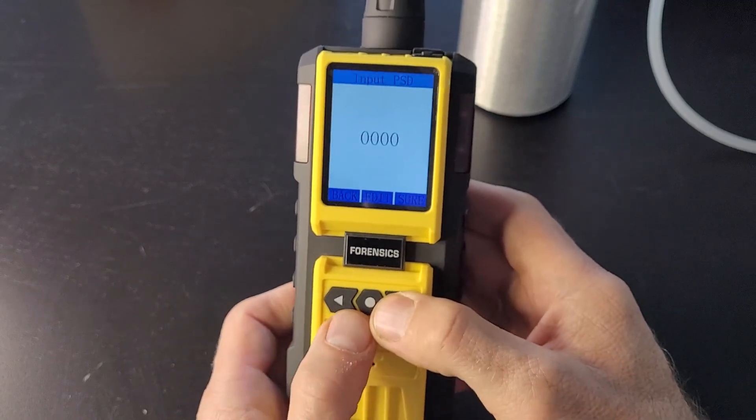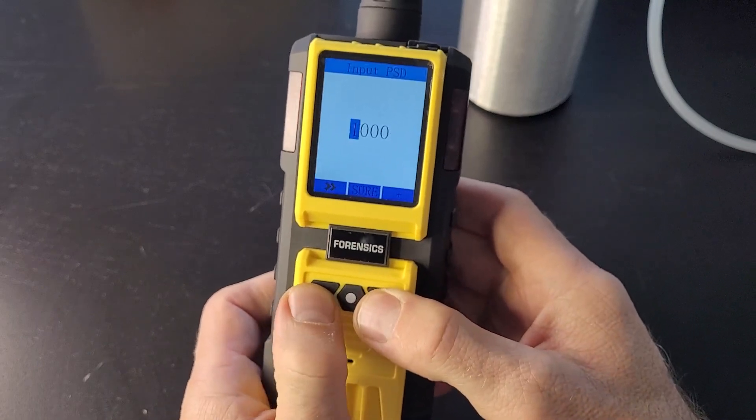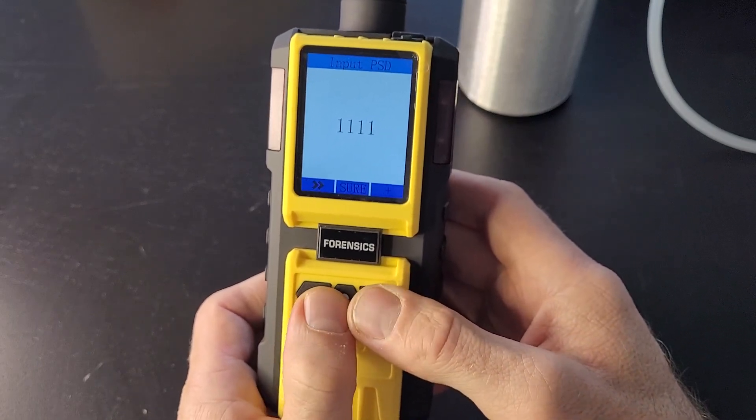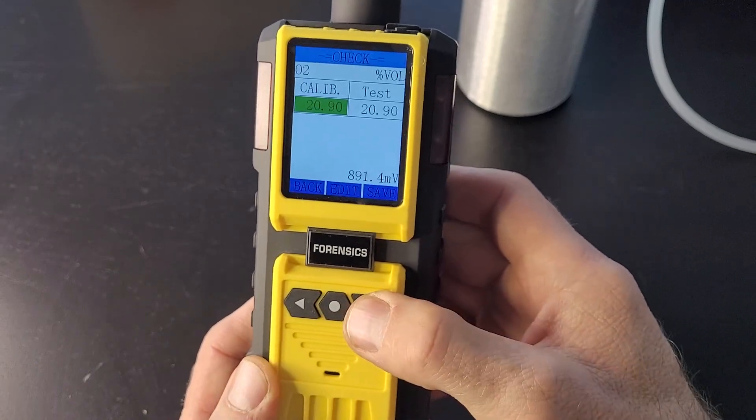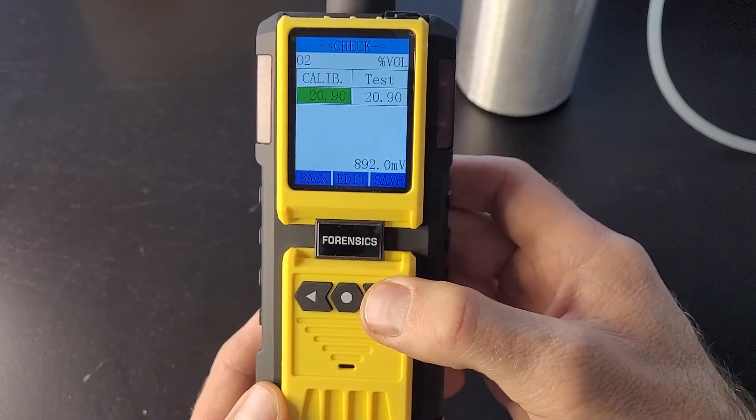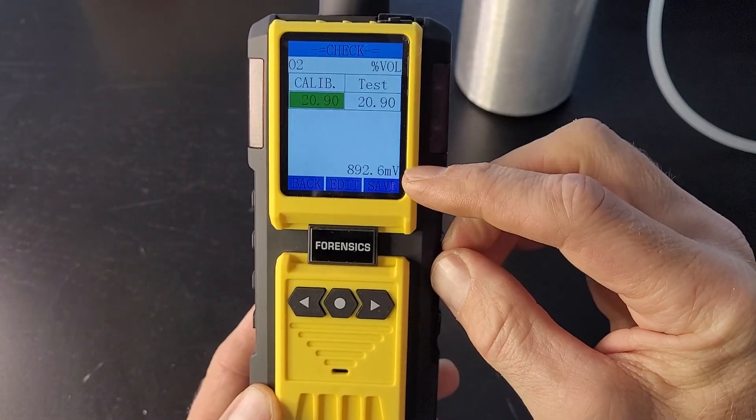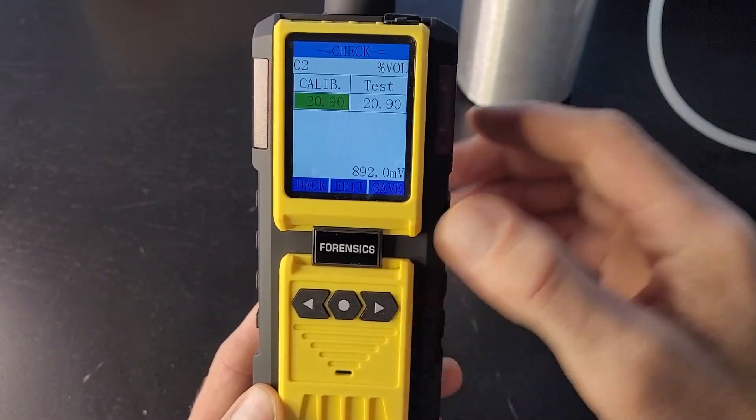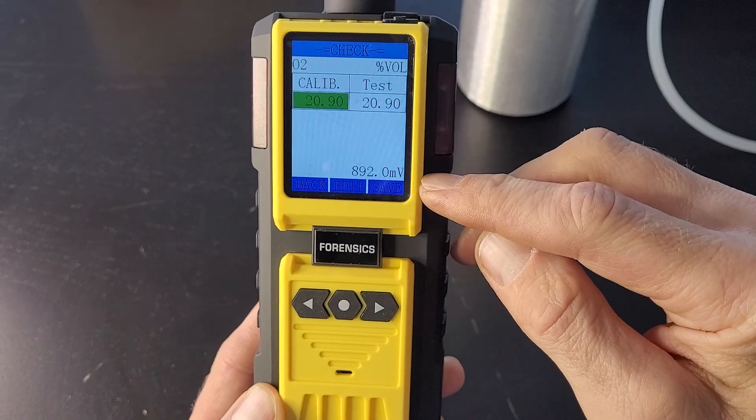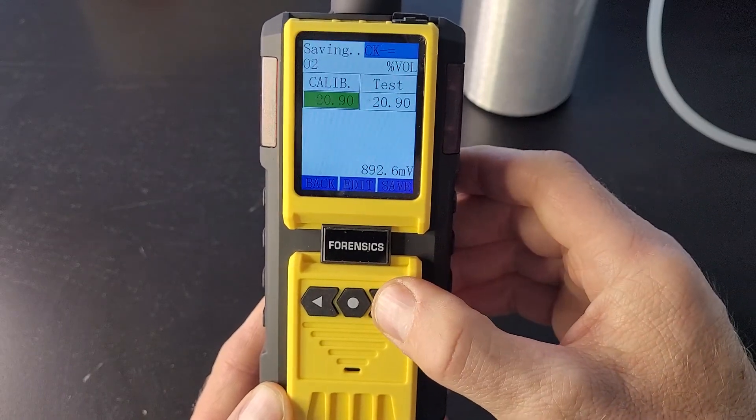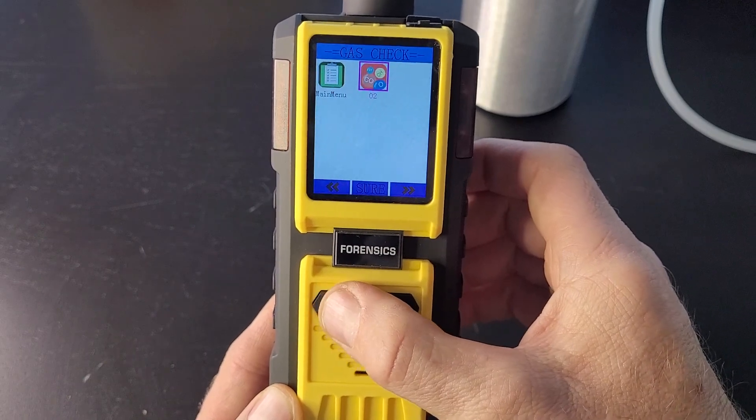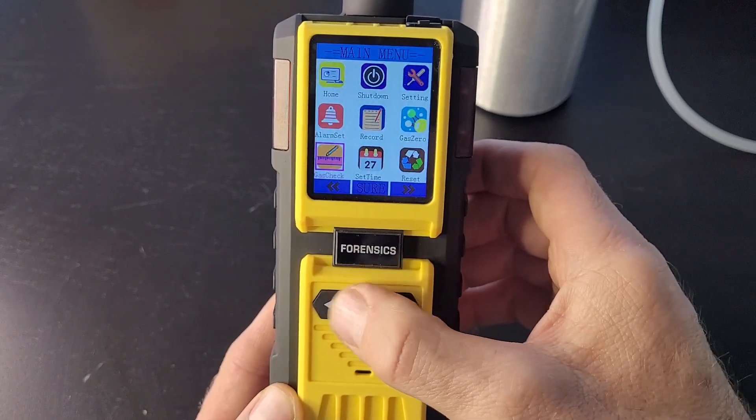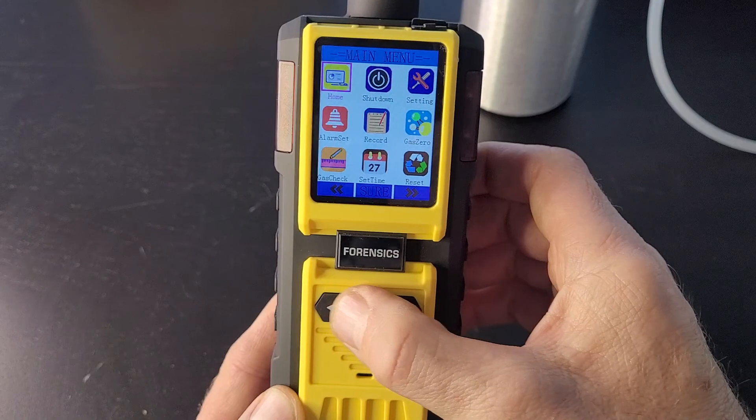The second part is for us to actually undertake the span calibration. Go to gas check. Put in again. 1, 1, 1, 1. Enter. And you want to lock it in to 20.9. You want to do this irrespective because there could be some noise fluctuating in the actual 20.9 voltage level. You want to just lock it in. And then you are done. You have undertaken your 20.9 span calibration.